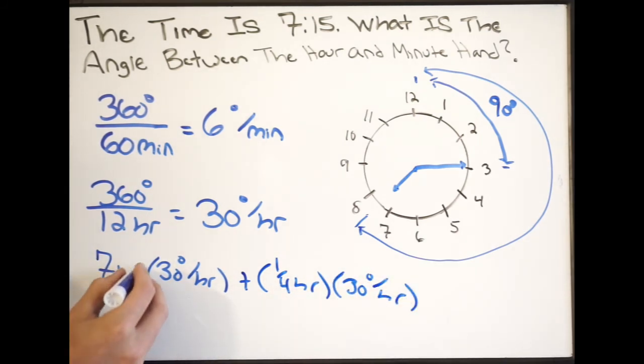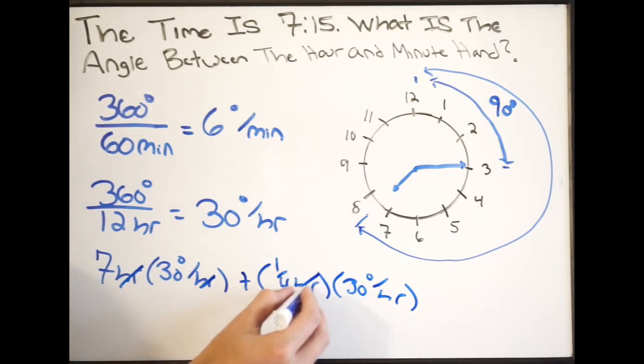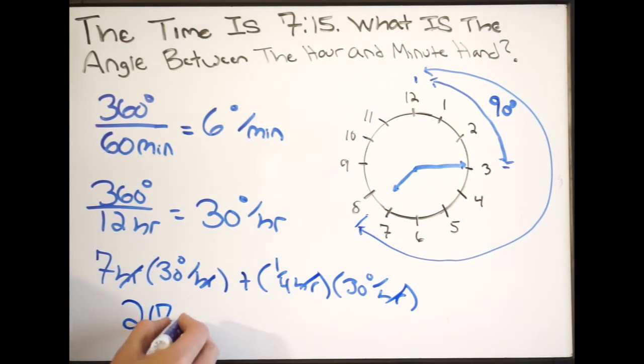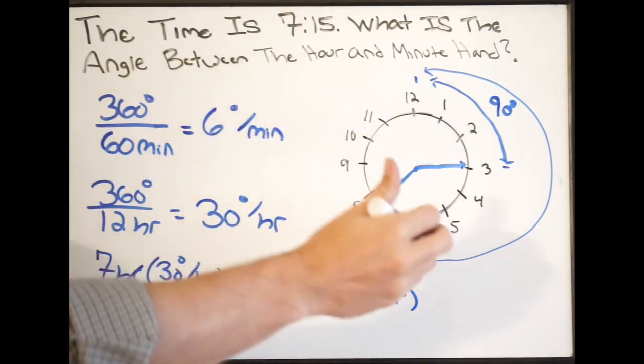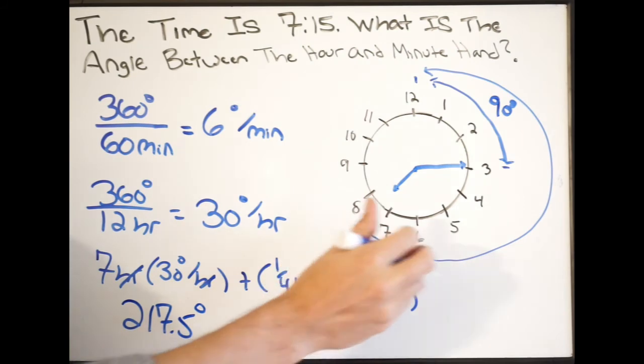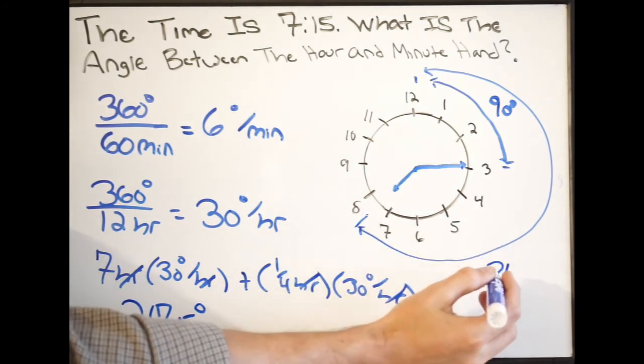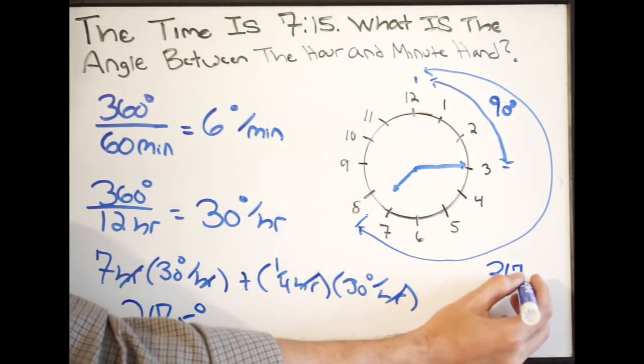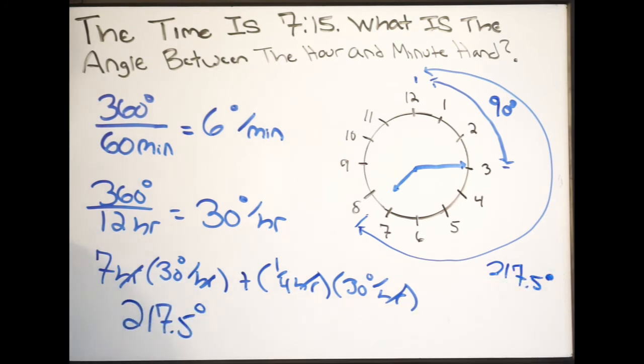When I do this, again, the hours cancel, and I'm left with just degrees. So let's go ahead and do this. So I'm doing 7 times 30, plus a quarter times 30. And that's going to give me 217.5, and this is going to be degrees. So this is the whole angle right here, 217.5 degrees. So we are almost done.